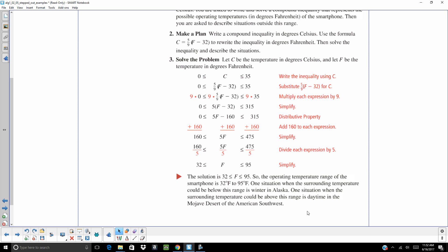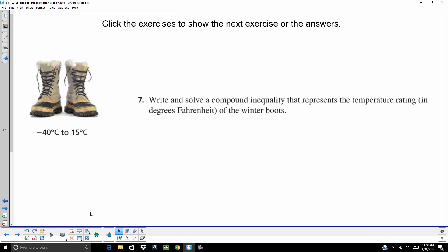I think these examples are a little bit extreme. You don't necessarily have to be in a winter in Alaska to get below 32 degrees Fahrenheit. Or you don't have to be in the Mojave Desert to be above 95. But there are two examples.